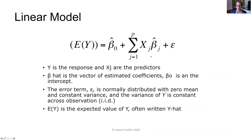The linear model: E(Y) is the expected value of Y, the response variable, as a function of X_j, the vector of predictor variable values, and beta_j, the vector of estimated coefficients. Beta-hat-0 is the estimated intercept and epsilon is the error term. In the linear model, the error term is normally distributed with zero mean and constant variance — the strong assumption of IID, independently and identically distributed.